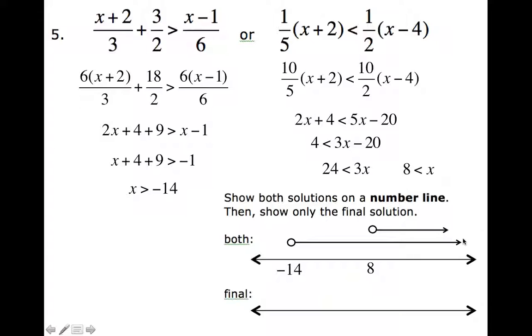So from negative 14 onwards is our solution. That is the final solution: negative 14 onwards. For example, what's a number that's greater than negative 14? Well, negative 13, it works. Or a number that's greater than 8? Well, let's say 9 or 10, it works. So all these numbers work in here. But numbers below negative 14 do not.